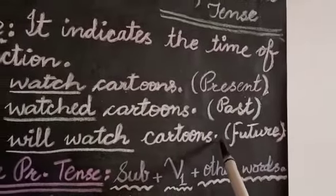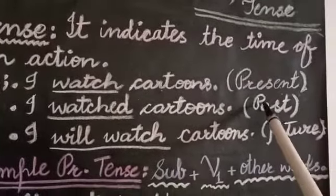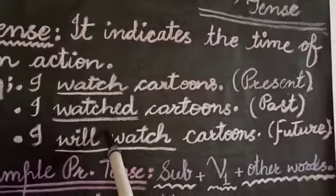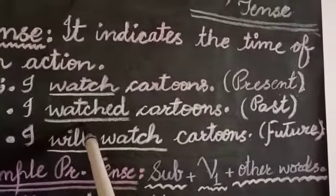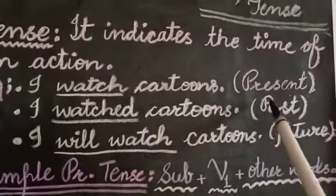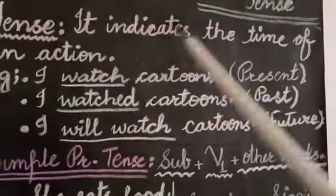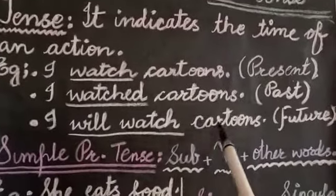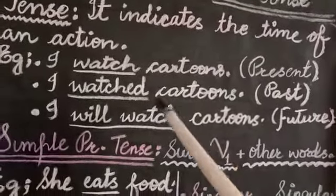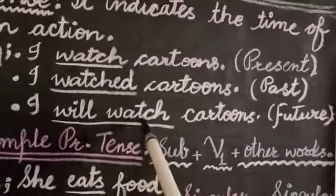For example: 'I watch cartoons' means at present it is my habit. 'I watched cartoons' means it is an activity I have already done in the past — the word 'watched' shows the action took place in past time. 'I will watch cartoons' means I have not watched them so far, but in the future I am going to watch them — 'will watch' shows the action will take place in future.